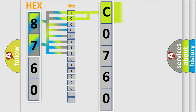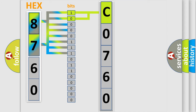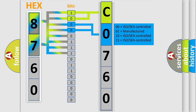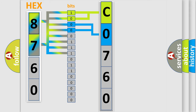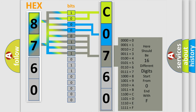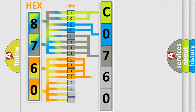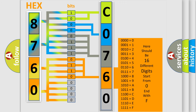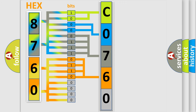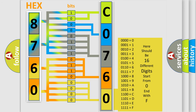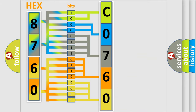By combining the first two bits, the basic character of the error code is expressed. The next two bits determine the second character. The last four bits of the first byte define the third character of the code. The second byte is composed of a combination of eight bits. The first four bits determine the fourth character, and the combination of the last four bits defines the fifth character. A single byte conceals 256 possible combinations.